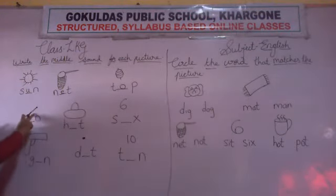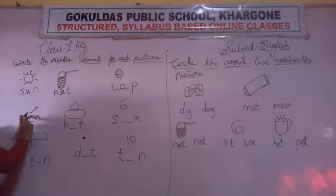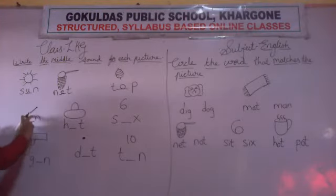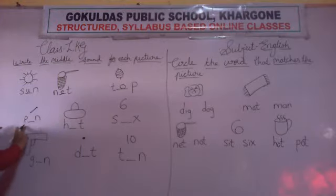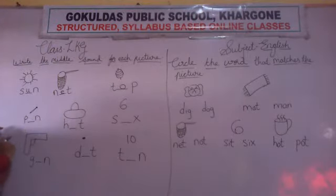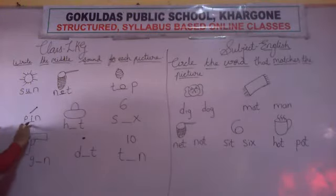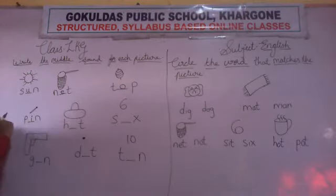Now look here. Which picture is this? This is picture of pin. P-I-N. What is the sound of I? E. The pin — P-I-N.